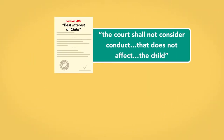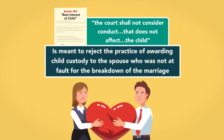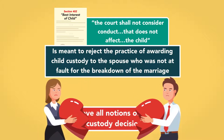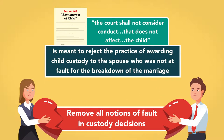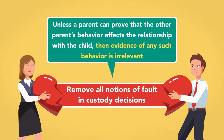Section 402's final sentence—that the court shall not consider conduct that does not affect the child—is meant to reject the practice of awarding child custody to the spouse who was not at fault for the breakdown of the marriage. It is now clear that unless a parent can prove that the other parent's behavior affects the relationship with the child, evidence of any such behavior is irrelevant.